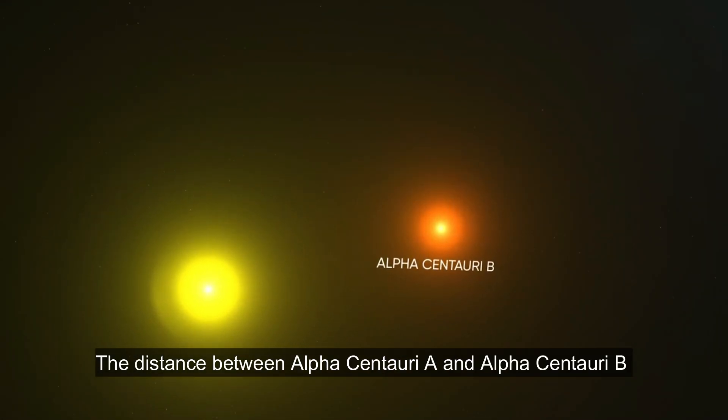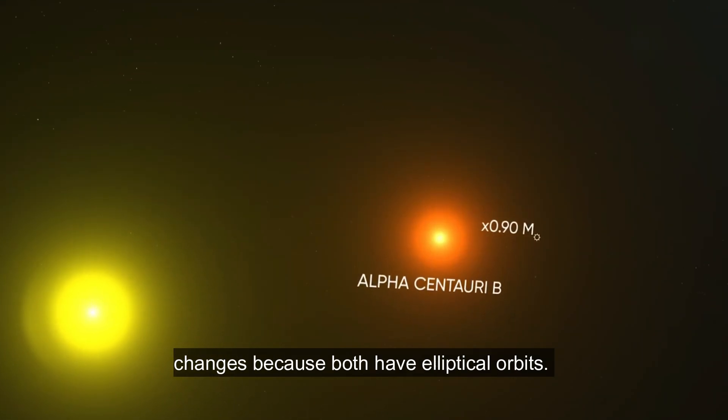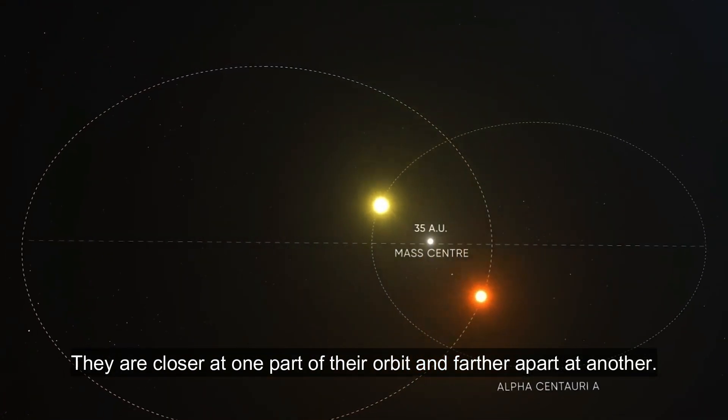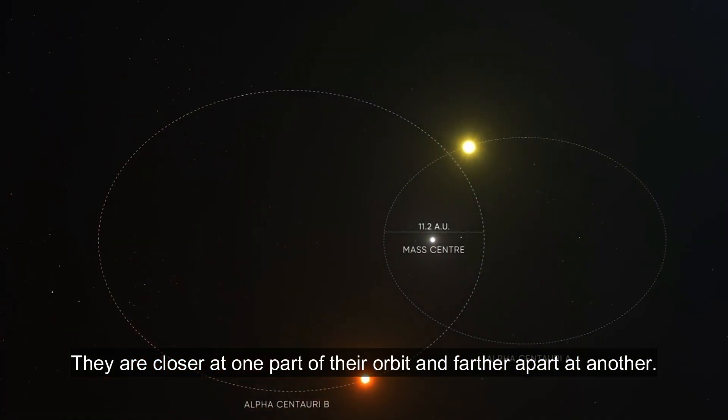The distance between Alpha Centauri A and Alpha Centauri B changes because both have elliptical orbits. They are closer at one part of their orbit and farther apart at another.